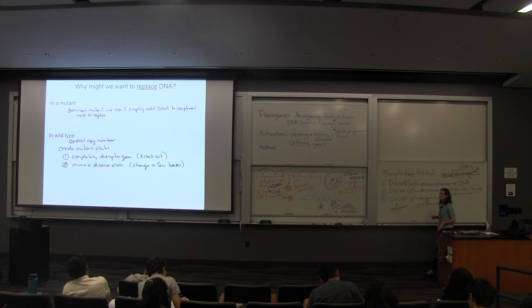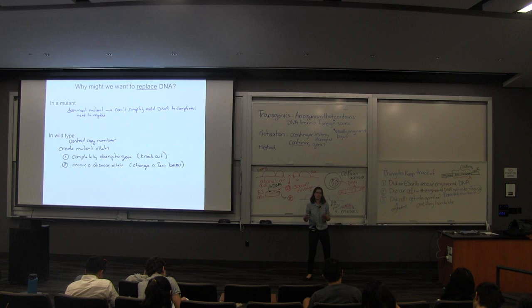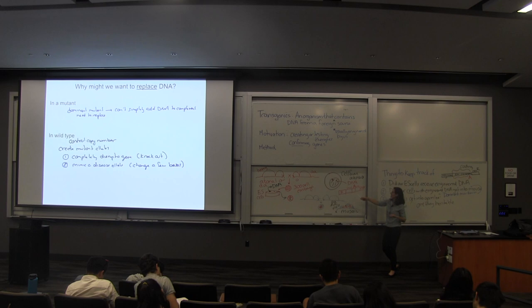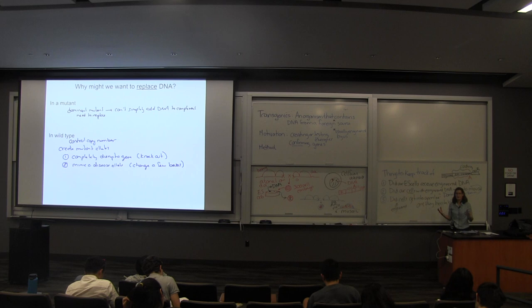Sometimes we don't want to completely disrupt a gene. Maybe from a GWAS study we know there's a certain type of allele associated with a disease. So maybe we can make a mouse model where we just tweak an allele — change a few bases or a few amino acids. We might want a very special type of allele, mimicking a disease allele. So those are two really common reasons we might want to replace something: complement a dominant, or create a precise new mutant.